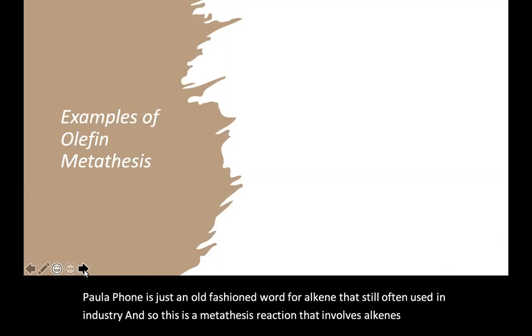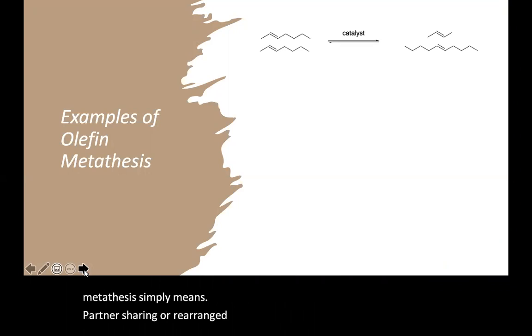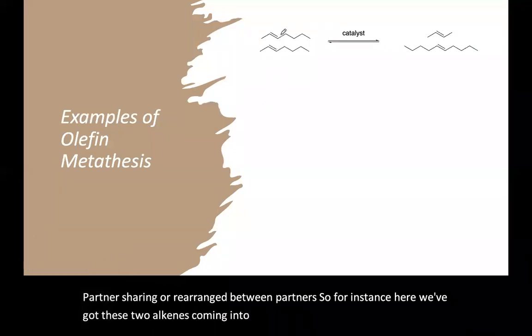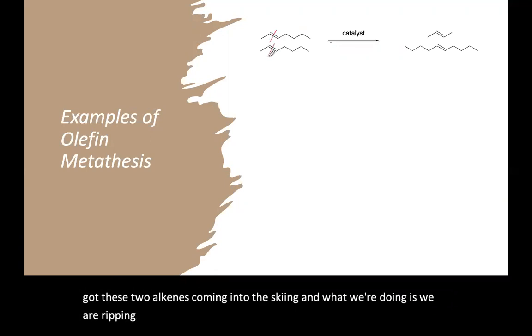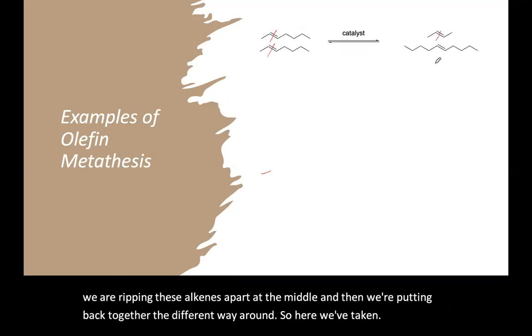Metathesis simply means partner sharing or rearranging between partners. For instance, here we've got these two alkenes coming into the scheme, and what we're doing is we are ripping these alkenes apart at the middle and then we're putting them back together the different way around. So here we've taken the smaller pieces and put them together, and the larger pieces and put them together.